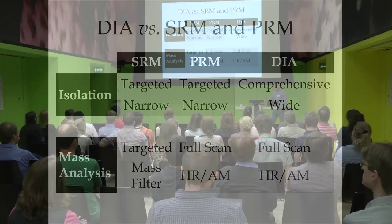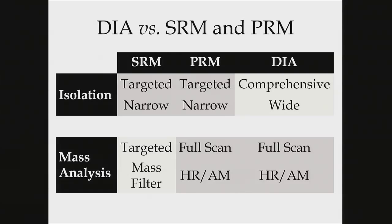Putting DIA in context with SRM and PRM: for isolation, DIA differs — it uses wide windows — whereas SRM and PRM both use targeted narrow isolation on a particular precursor. For mass analysis, DIA is more similar to PRM: both measure full scan with high-resolution accurate mass. So for the MS2 analyzer, DIA gains some of the same benefits claimed for PRM, specifically improved selectivity due to high-res accurate mass measurements.